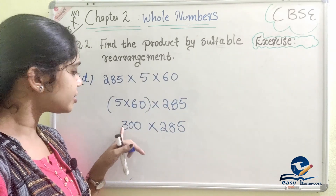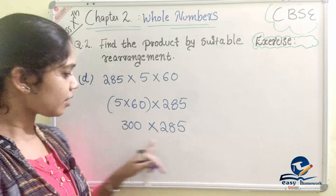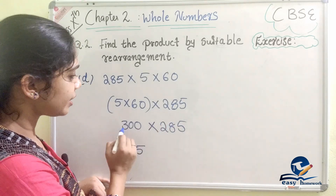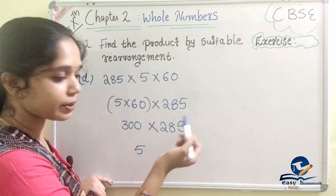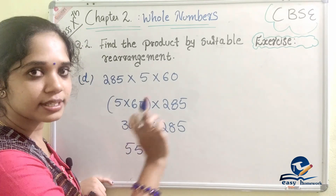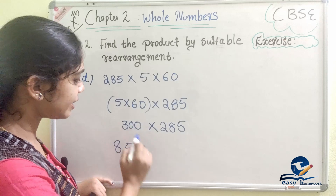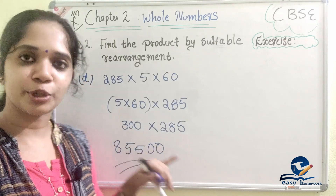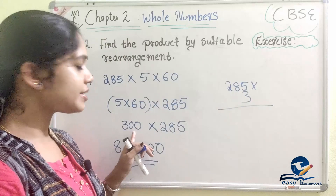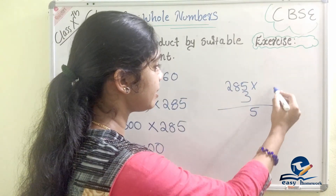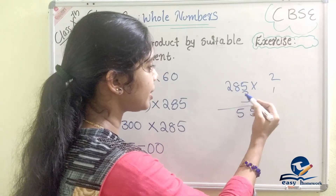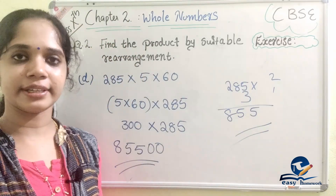We multiply 285 × 3 step by step: 3 × 5 = 15, write 5 carry 1. Then 3 × 8 = 24, plus 1 = 25, write 5 carry 2. Then 3 × 2 = 6, plus 2 = 8. So 285 × 3 = 855. The same answer is confirmed. Clear?